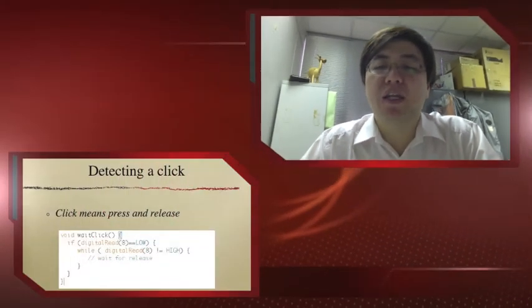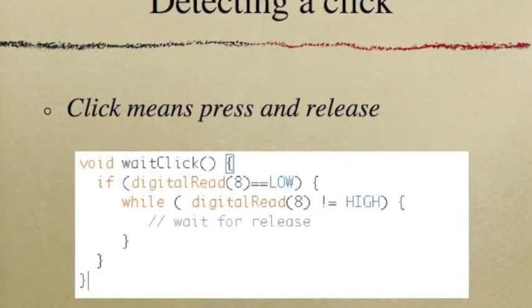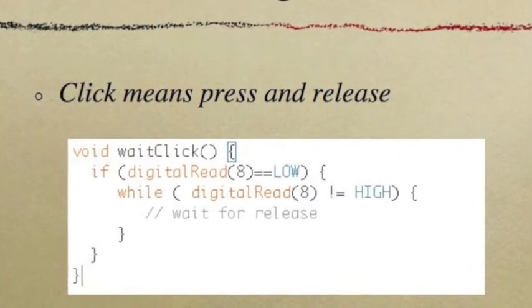In today's lab, you also have to detect a click. Well, a click means you press the button, and hold it, and then release it. So, if you just check the logic high or low, that's not click. The real click means you click, you press, and you hold, and you release. That means you will observe a logic change from one to zero when you first hold the button, and once you release, you're gonna see the one again.